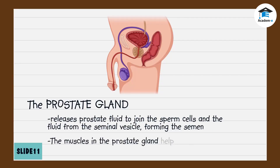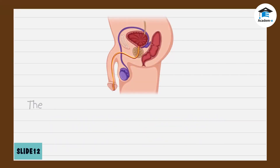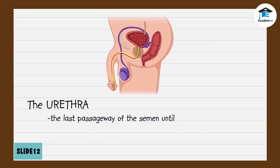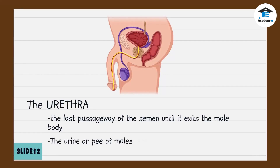When the semen is complete, the muscles in the prostate gland help push the semen into the urethra. The urethra is the last passageway of the semen until it exits the male body. The urine or pee of males also passes through the urethra.